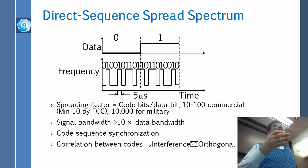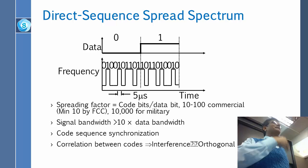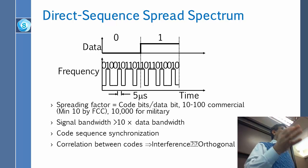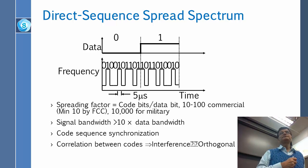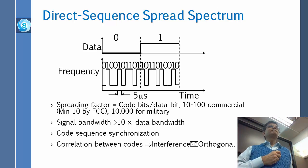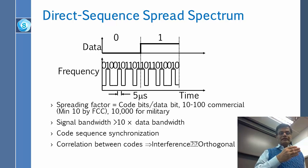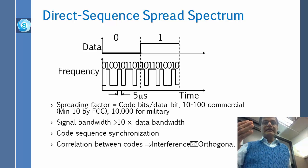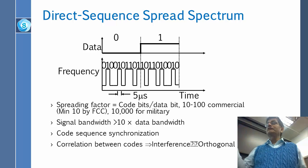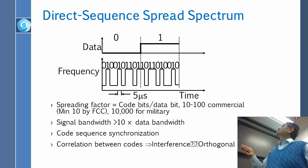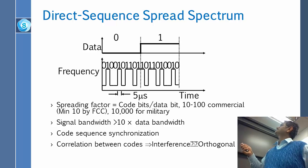So again, with different codes, many people can talk in the same room. This is called Direct Sequence Spread Spectrum, DSSS.